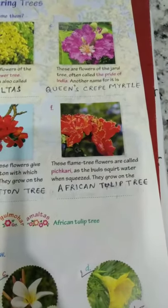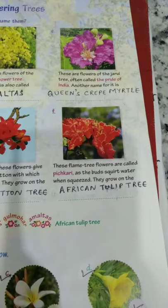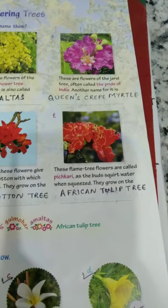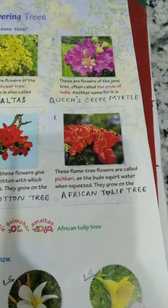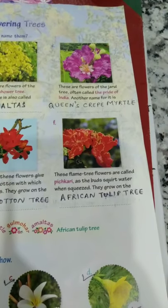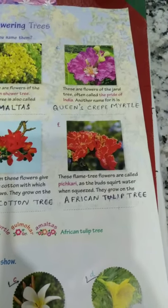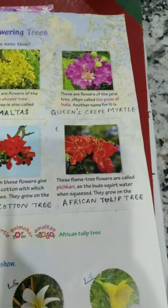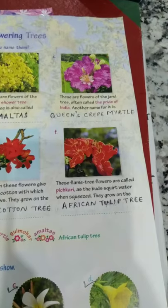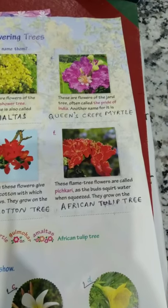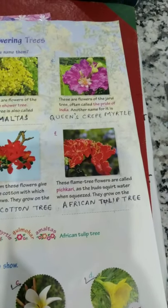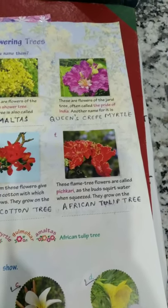See the last one. These flame tree flowers are called pichkari as the buds squirt water when squeezed. They grow on the African tulip tree. It is also called fountain tree or pichkari because, just like a pichkari, it flows out water in a fast stream when squeezed. It grows up to a height of 80 feet.